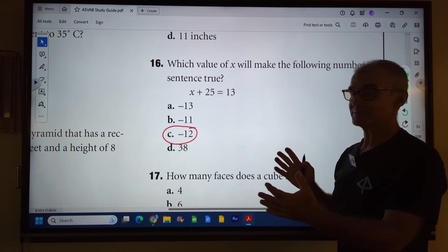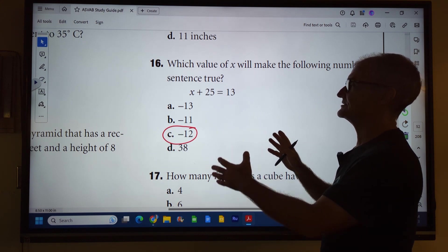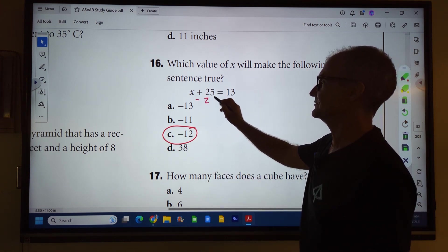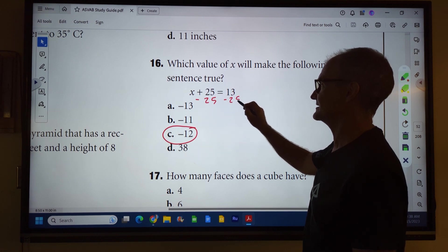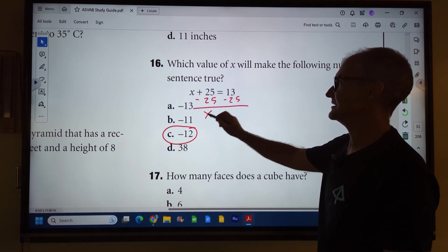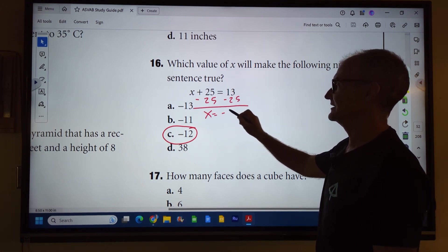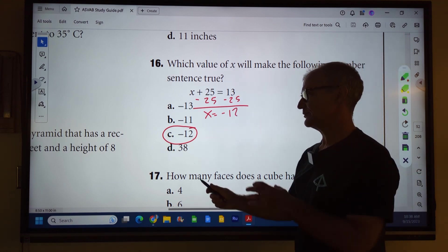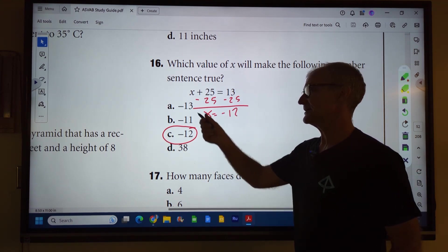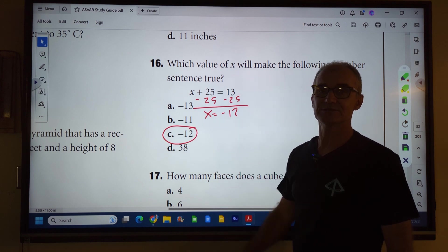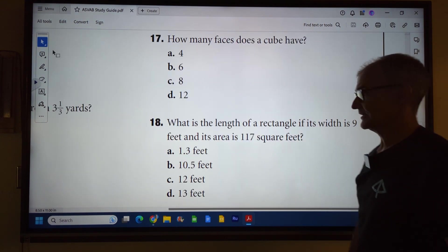The way you do algebra in general is you try and reverse the operation. So if this is addition, you subtract 25 from both sides. Now you have x by itself. 13 minus 25 gives you the negative 12. My point is you could do the algebra if you remember that. If not, you could kind of use the answers to figure out a good solution.